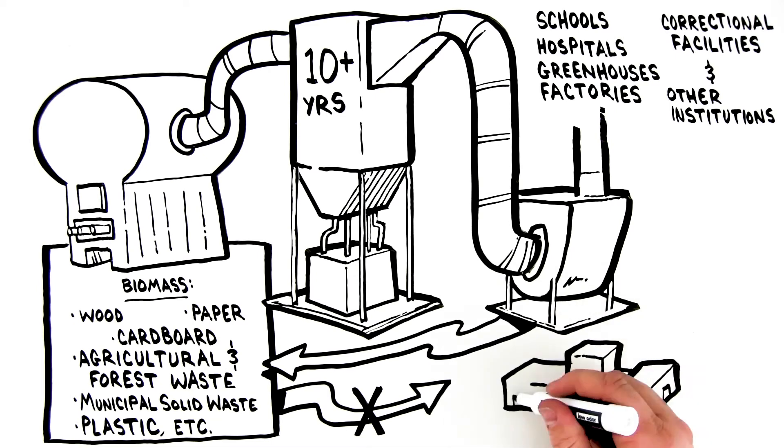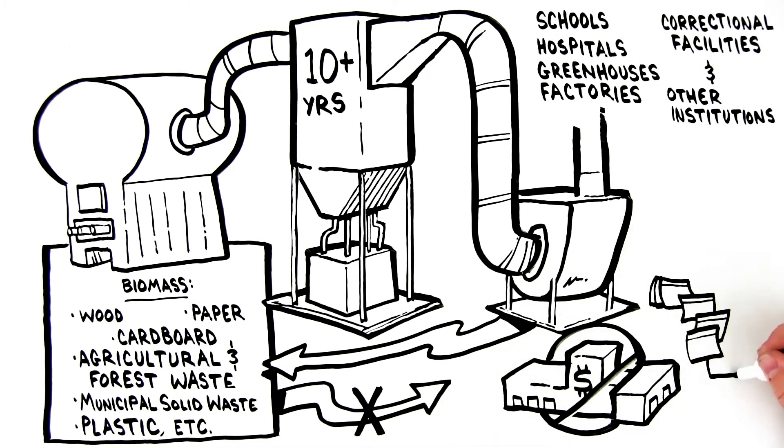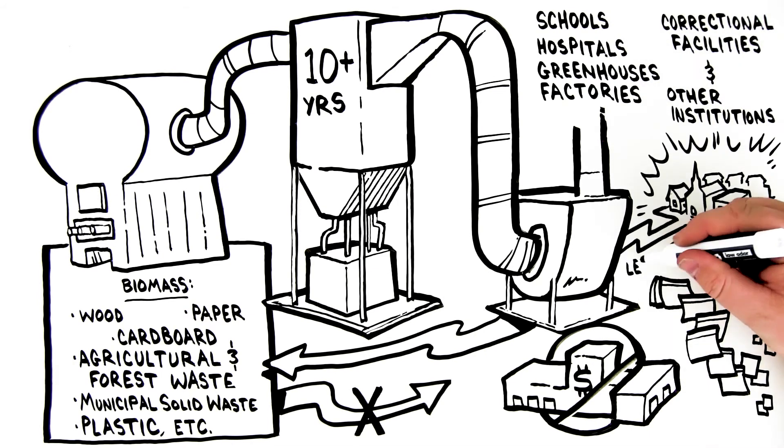And unlike large and expensive power plants that take years to build, an AgriPower system is sized to enable small to mid-sized communities to start generating power in less than one year.